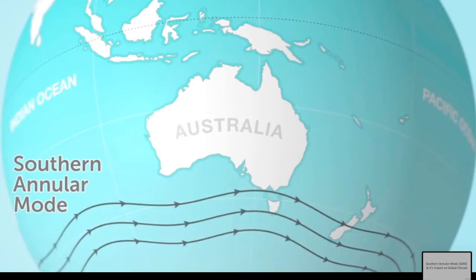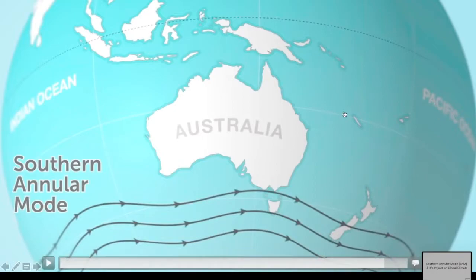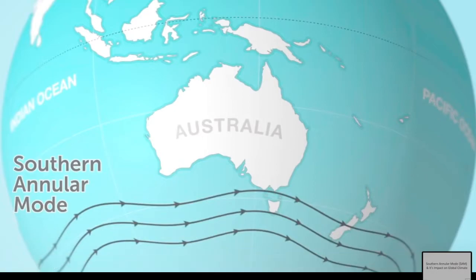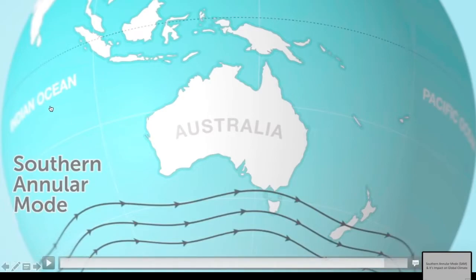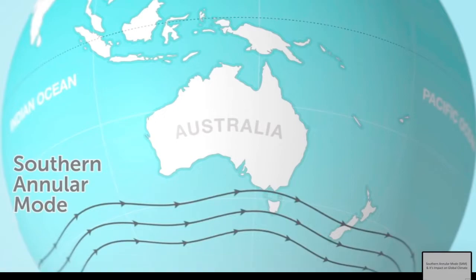This front also triggers rainfall combined with other climatic processes. In the Pacific Ocean we have ENSO — El Niño and La Niña. In the Indian Ocean we have the IOD, the Indian Ocean Dipole. SAM has some relation with these two climatic events.